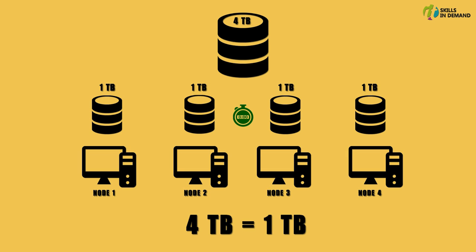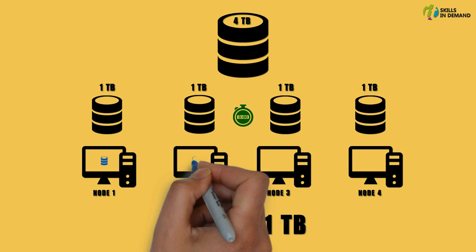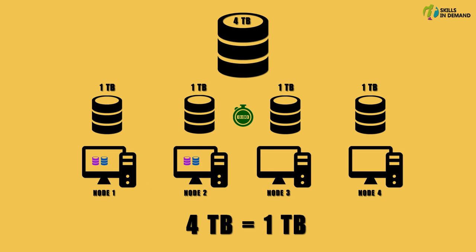In order to provide high availability, Hadoop replicates each part of the data onto other machines present within the cluster. The number of copies it will replicate depends on the replication factor. By default, the replication factor is set to 3. With the default replication factor, there will be three copies for each part of the data on three different machines.